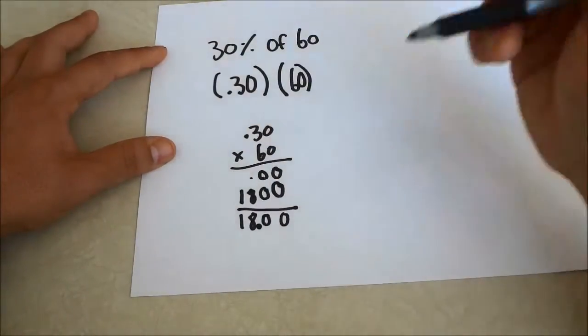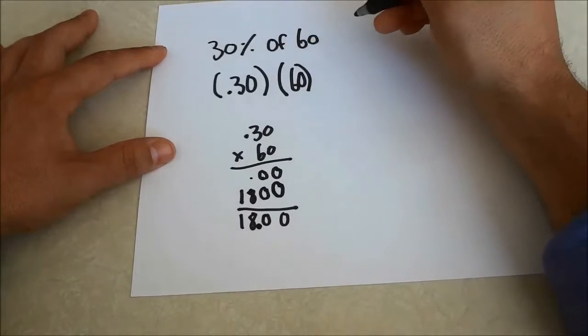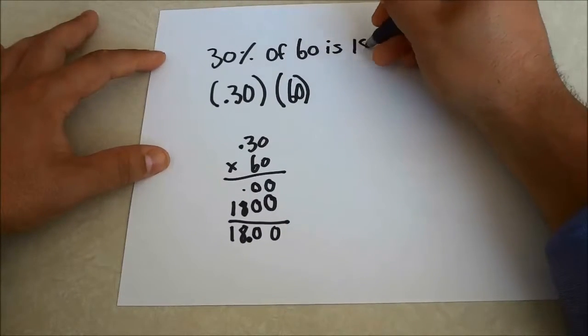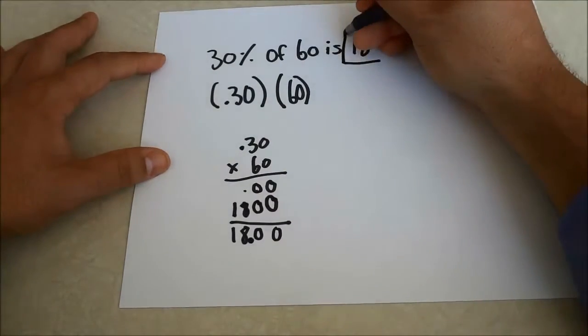And our final answer is 18. So 30% of 60 is 18.